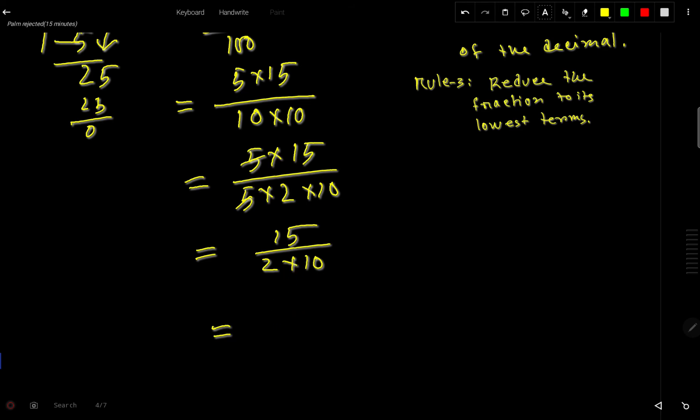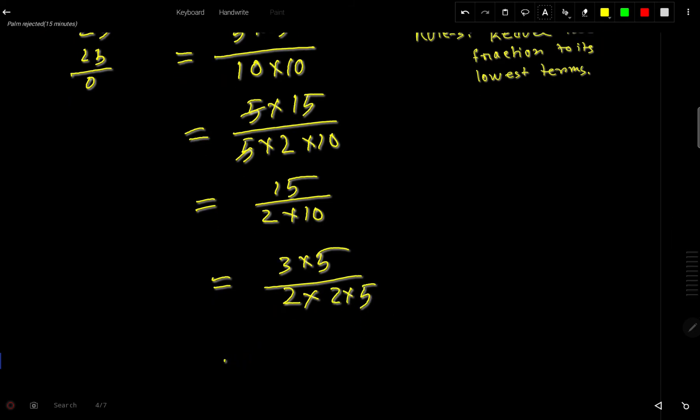We can split this 15 as 3 times 5, and we can split this 10 as 2 times 5. Just use the cancellation method.